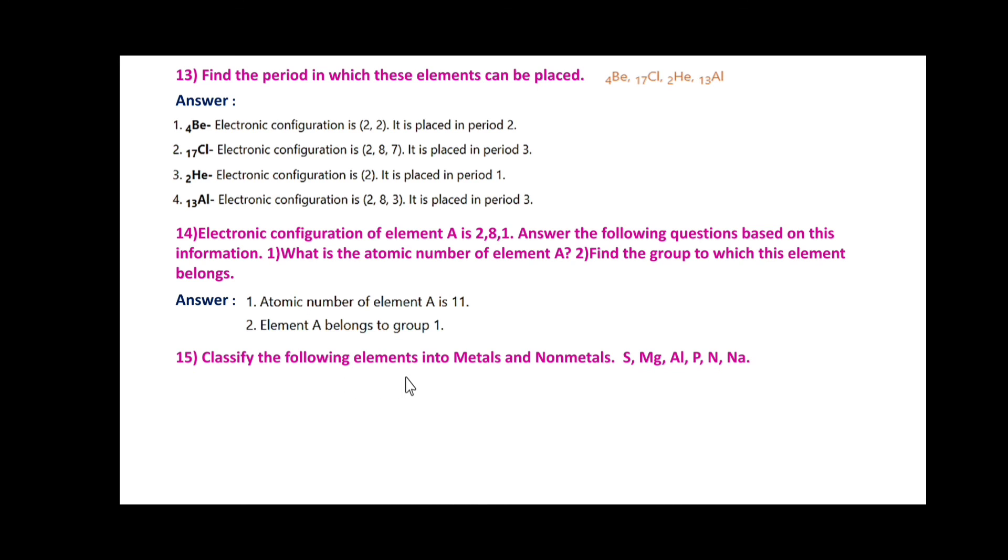Classify the following elements into metals and nonmetals: S, Mg, Al, P, N, and Na. S sulfur is nonmetal. Mg magnesium is metal. Al aluminum is metal. P phosphorus is nonmetal. N nitrogen is nonmetal. Na sodium is metal.